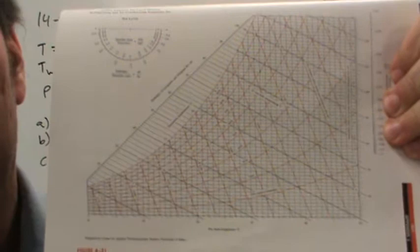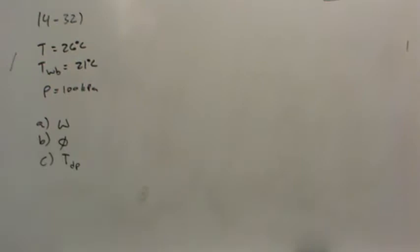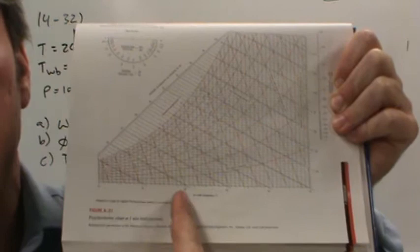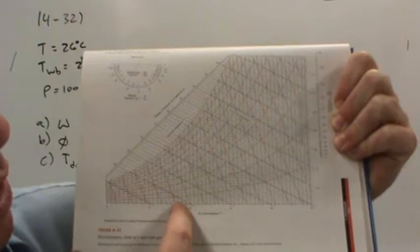And what we're going to do is locate the information that's been given. So we've been given a dry bulb temperature of 26 degrees. What does that do? Well, that locates us on the x-axis. If you notice, you've got 10, 20, 30. Each small tick mark is 1 degree.